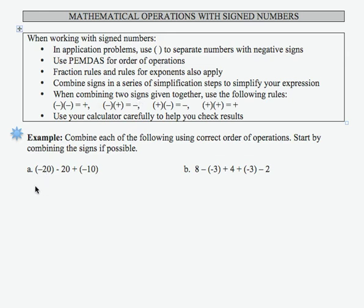So let's look at part A. I have negative 20 minus 20 plus a negative 10. I'm going to start by reconciling any signs that I can and removing any parentheses that I can. I can remove the parentheses here because there's no sign out front.